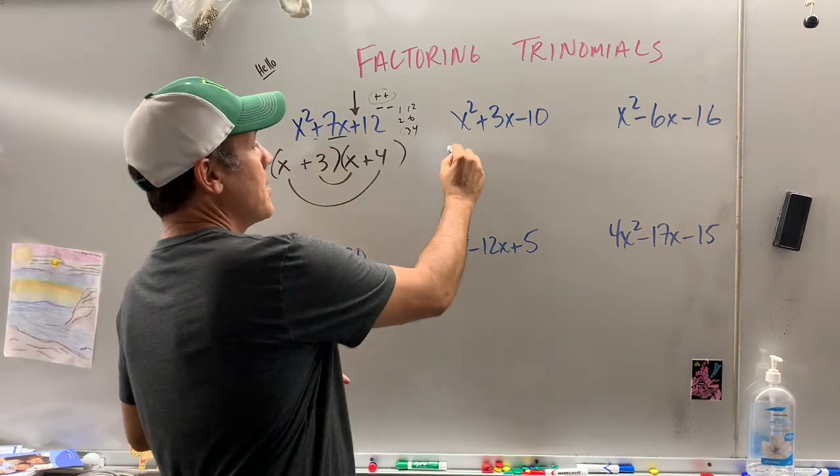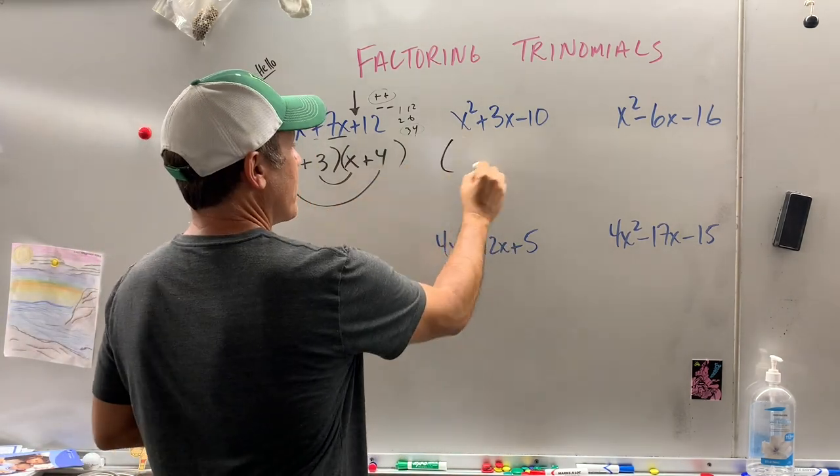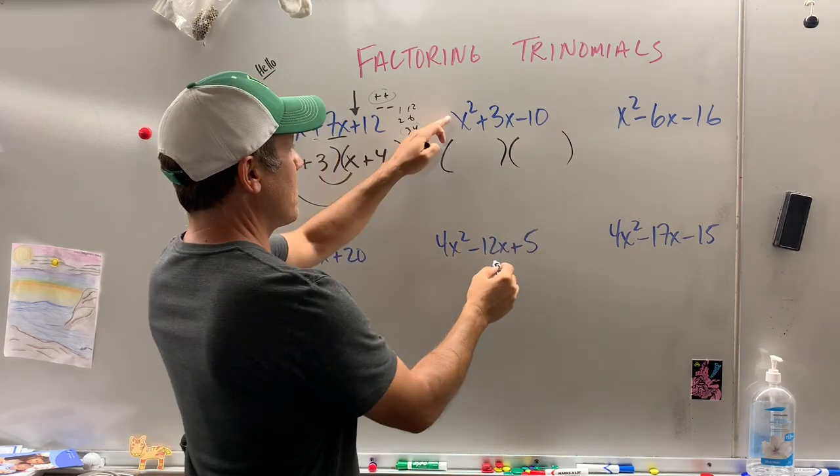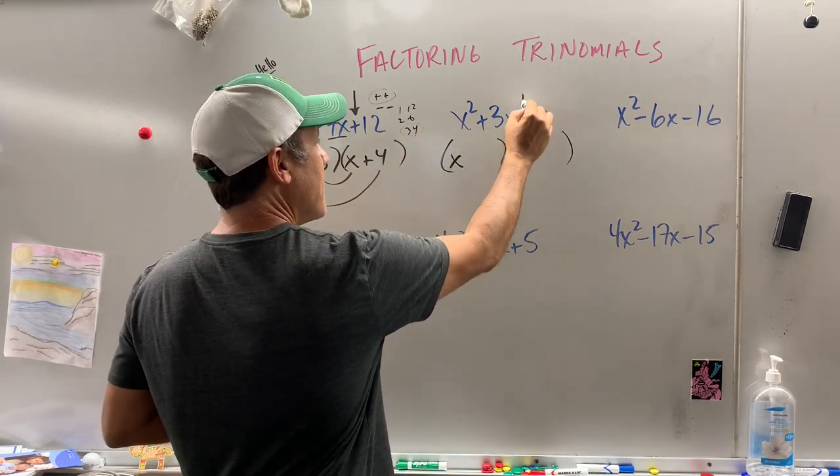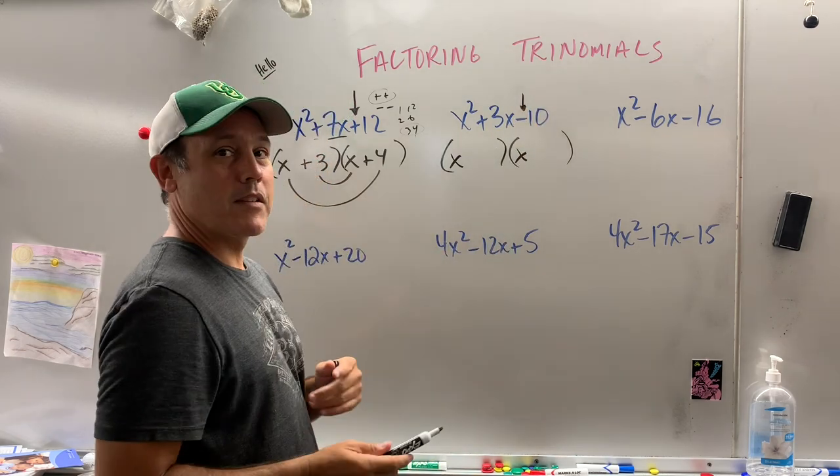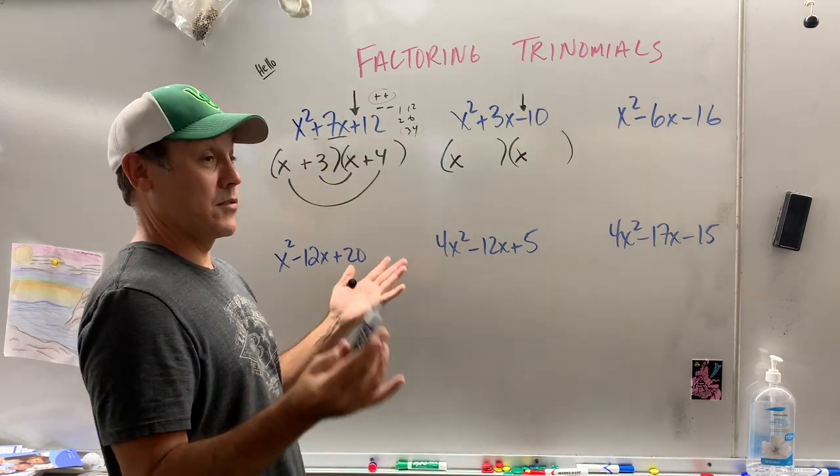Let's look at this one. Again, what's the first move? Parenthesis, parenthesis. There's no coefficient, I love it. x and x. I'm looking at this sign. What times what gives you a minus? A plus and a minus. That's the only option we have.